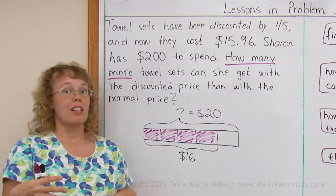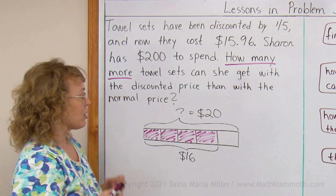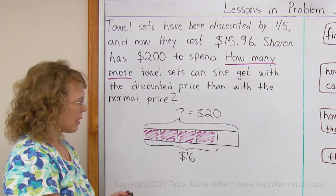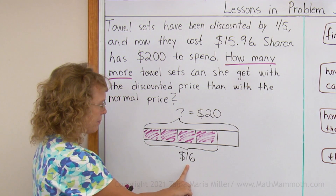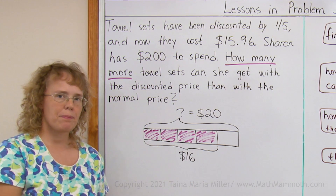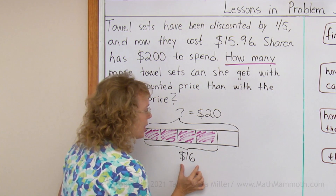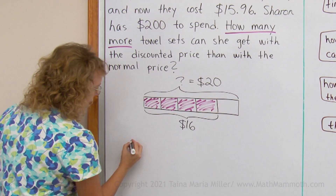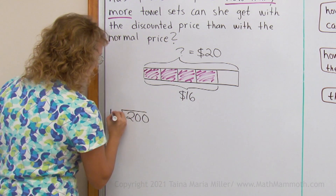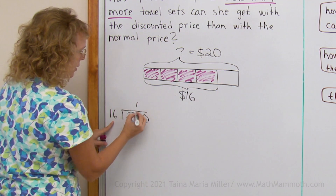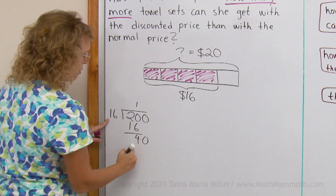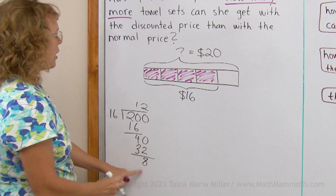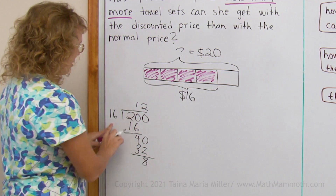Now what happens next is we figure out how many tile sets she can get with $200 at the discounted price or at the normal price. With the discounted price of $16, how many can she get with $200? How many times does 16 fit into 200? That's a division problem. Let's divide 200 by 16: 16 goes into 20 just once, and into 40 two times; 2 times 16 is 32, remainder 8. So she can get 12 sets with the discounted price.